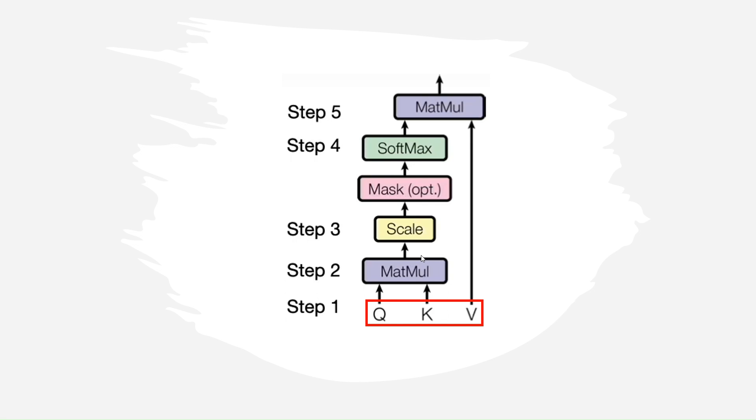To do a similarity check and find the most relevant keys based on the query, we use a dot product. This produces a new matrix. We then scale the numbers in this new matrix and apply the softmax operation to normalize the numbers in the scaled matrix. This creates a normalized matrix that can be considered as an attention map. Finally, we multiply the attention map with the value matrix to retrieve our information. The retrieved information contains the relation of each word with respect to other words in the input text.